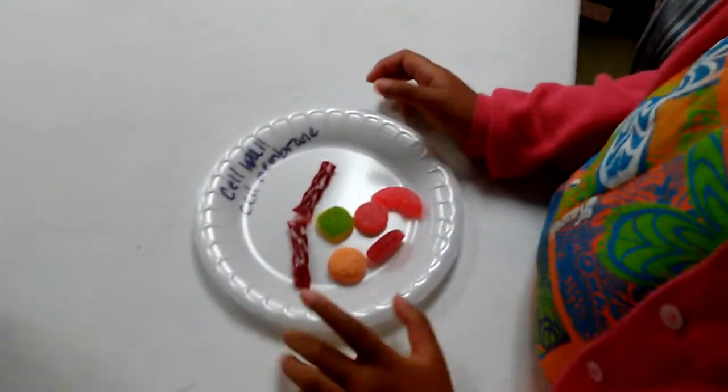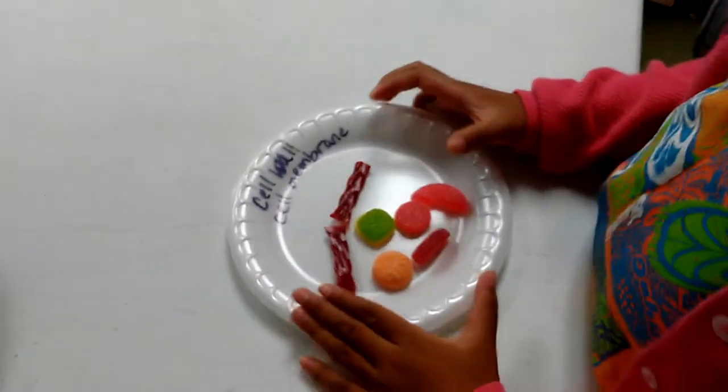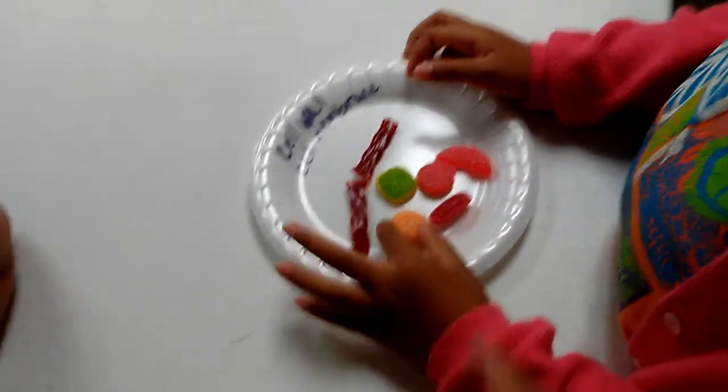What was the outer part? Cell membrane. Then cell wall.